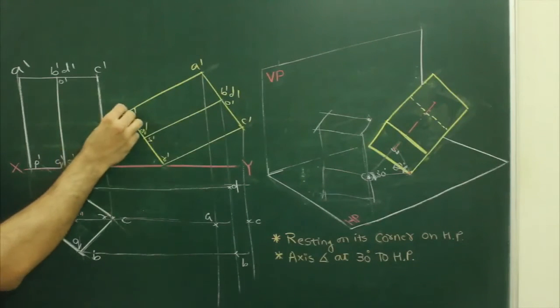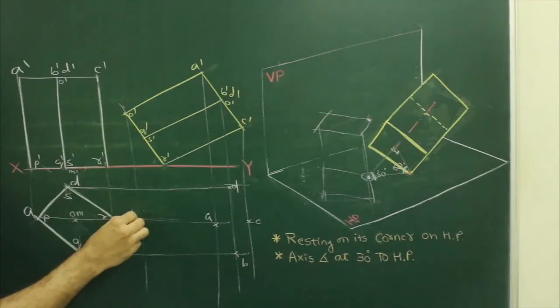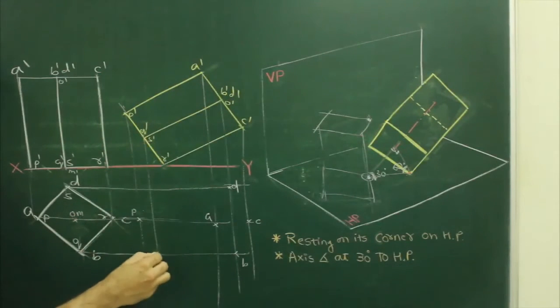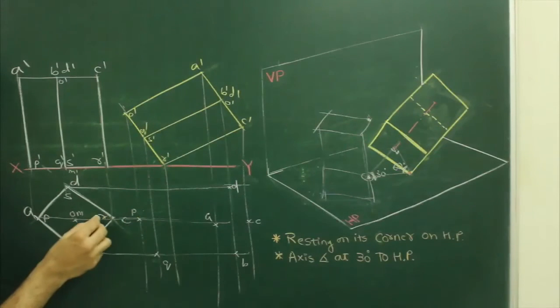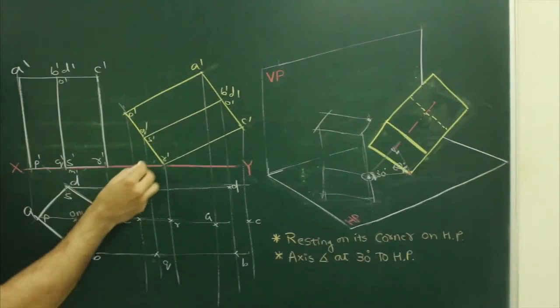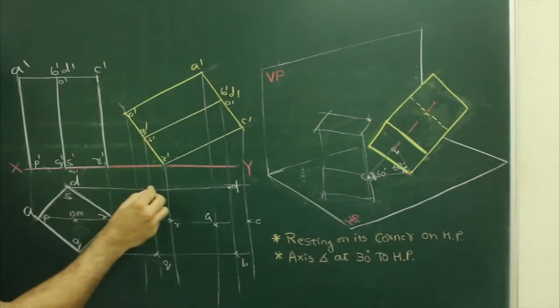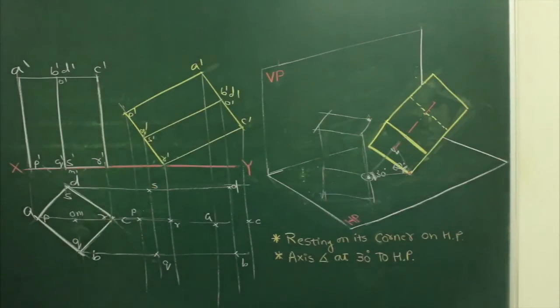Then we will project P dash from here, so get P. Q dash from here, so get Q. See, this Q is from here, B is from here. R dash from here, R from here. S dash from here, S from here.